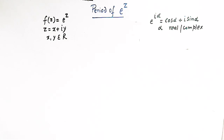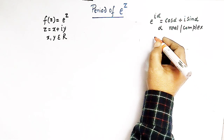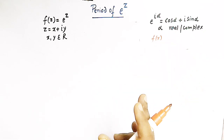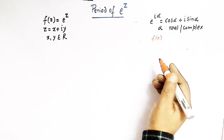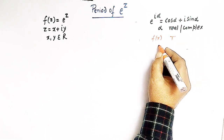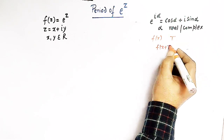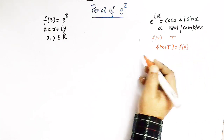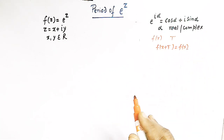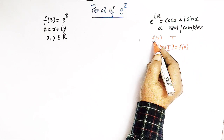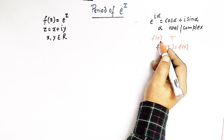Let us quickly see the definition of a periodic function. A function f of x is said to be a periodic function of x if there exists a positive real number t such that f of x plus t is equal to f of x. The smallest value of t is known as the period of this function f of x.